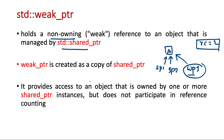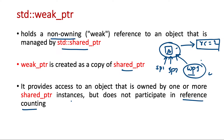A weak pointer is created as a copy of a shared pointer and it provides access to an object that is owned by one or more shared pointers. The weak pointer is not owning the resource — it just has some access to it, but does not participate in reference counting. The destruction and memory management of the object is still based on the reference count alone.